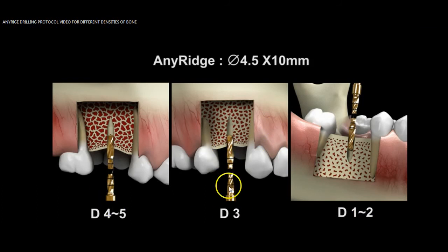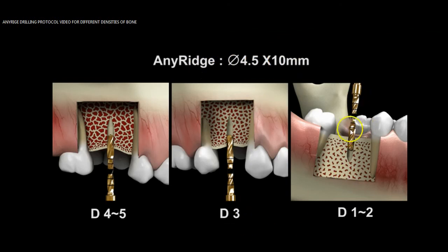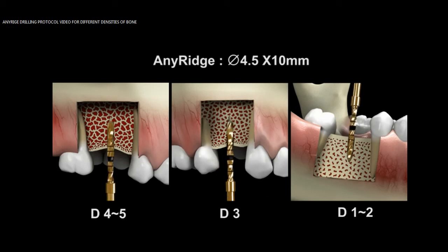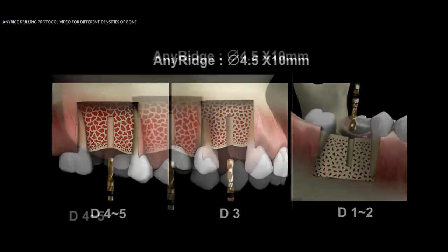The next drill that you see — and by the way, it's showing the drilling protocol for a 4.5 by 10 AnyRidge implant — is a 2.0 twist drill. The markings on here are 7, 8.5, 10, 11.5, 13, and 15. So, your 10 millimeter mark is right there. That's your second drill.